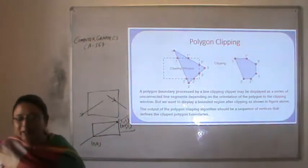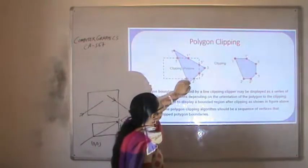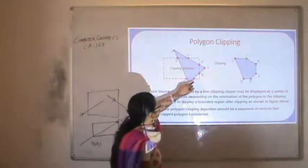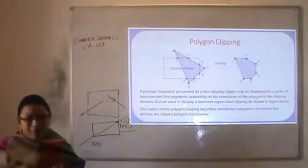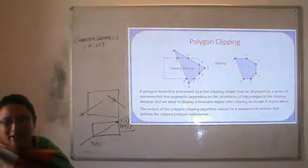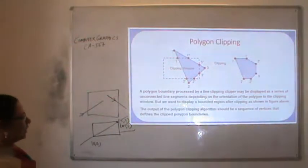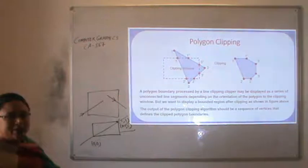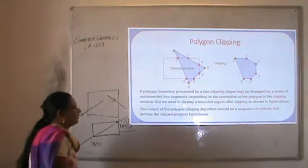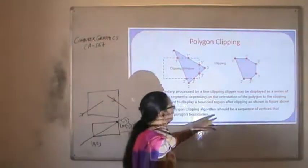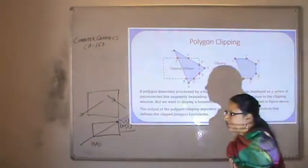The next topic is polygon clipping. Here, we have a clipping window and a polygon, and we need to find which part of the polygon will be visible after clipping. A polygon processed by a line clipping algorithm may be displayed as a series of unconnected line segments, depending on the orientation of the polygon to the clipping window. The output of the polygon clipping algorithm should be a sequence of vertices that defines the clipped polygon boundary — a closed figure.